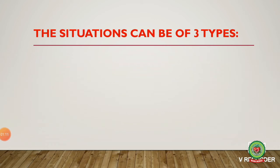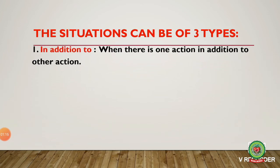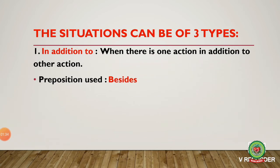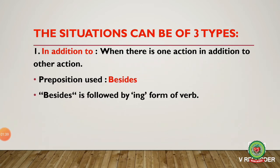Now, the situations can be broadly classified into three categories. First: in addition to. When there is one action in addition to another action, basically whenever you feel like using 'and' to join two sentences, the preposition 'besides' can be used. The rule is that 'besides' is followed by the -ing form of the verb. For example: besides playing, besides working, etc.